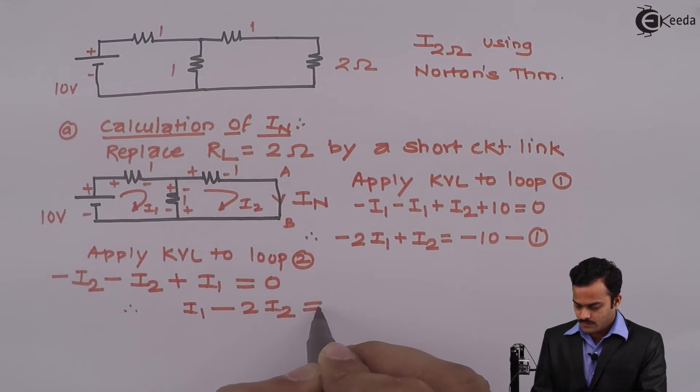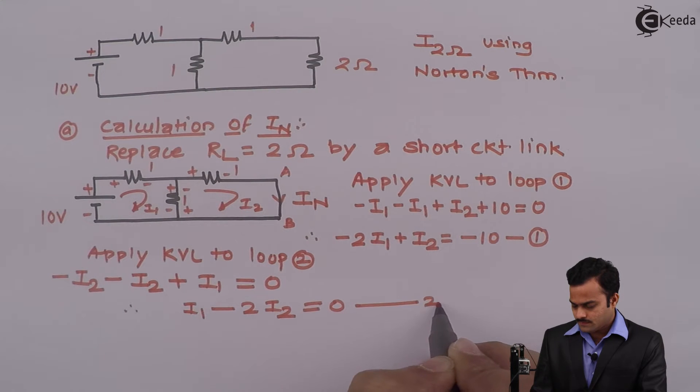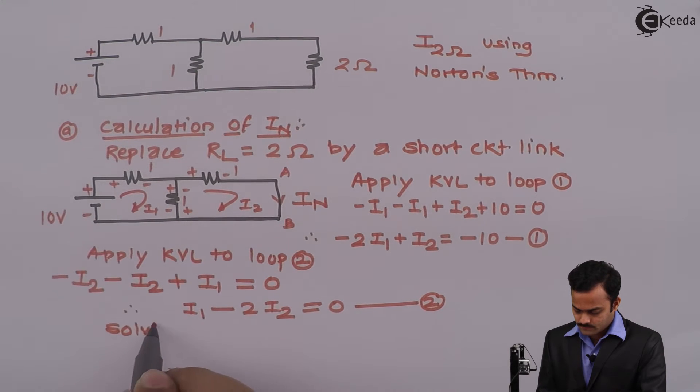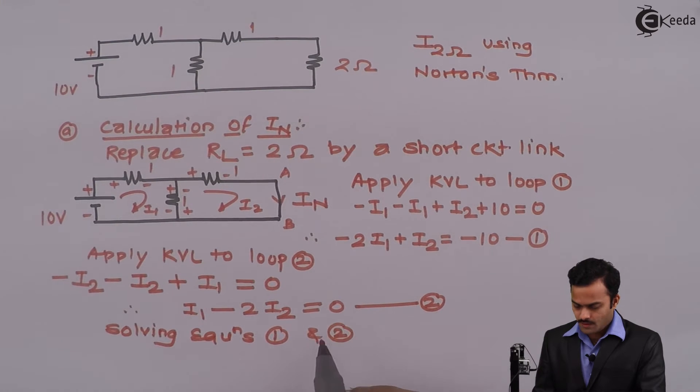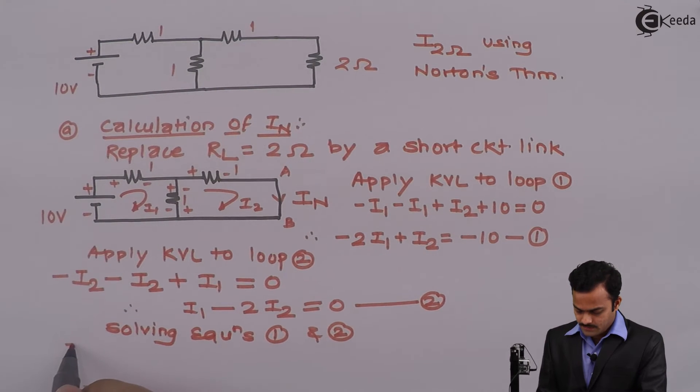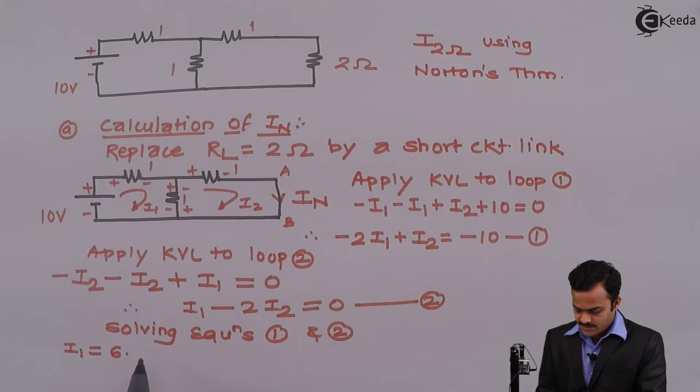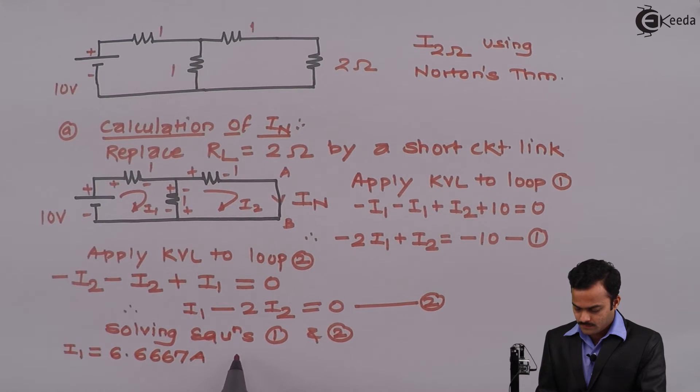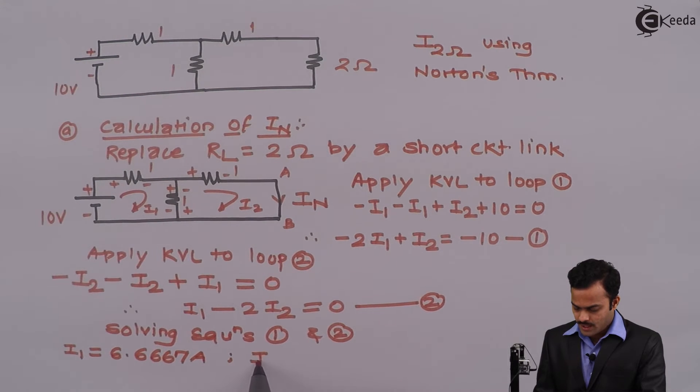So this is equation number 2. Solving equations 1 and 2, I will get I1 as 6.6667 ampere and I2 as 3.33333 ampere.